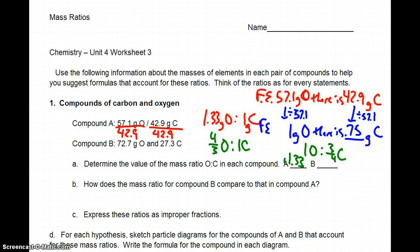And then compound B, I would divide by 27.3. So 72.7 divided by 27.3 is 2.66. And then it says, how does the mass ratio for compound B compared to that in compound A? It's twice as much. And then it says, express these ratios as improper fractions. So again, that's 4 thirds and 8 thirds.